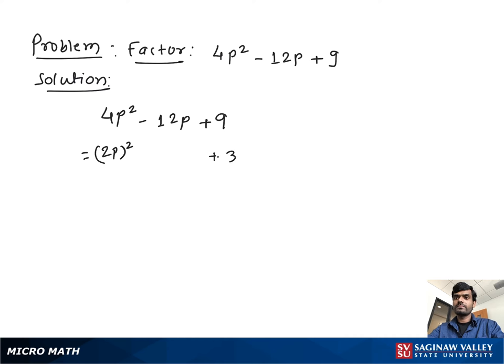If we focus on the form a minus b all to the square, which is equal to a square minus 2ab plus b square, which is equal to a minus b times a minus b. Then we need a middle part which is 2ab.